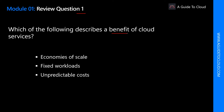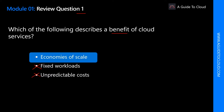Question 1: Which of the following describes a benefit of cloud services? The keyword here is 'benefit of cloud services.' The options are: economics of scale, fixed workload, or unpredictable cost. Fixed workload is completely wrong because cloud provides the most flexible workload choice. Unpredictable cost is definitely not correct — you can predict cost, and there are ways to calculate it. The right answer is economics of scale, which is the ability to do things more cheaply and more efficiently when operating at a larger scale.